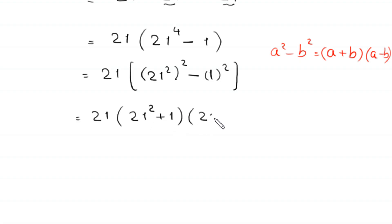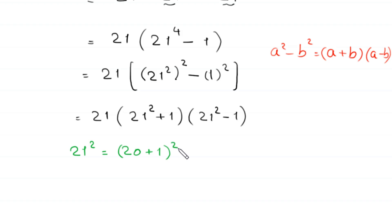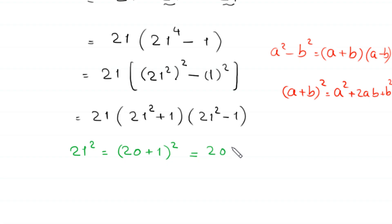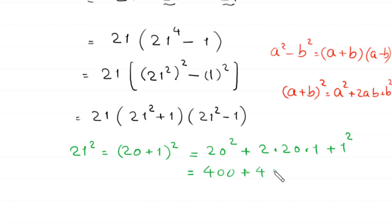Now 21 squared equals (20 plus 1) whole squared. By using the algebraic identity (a plus b) whole squared equals a squared plus 2ab plus b squared, this becomes 20 squared plus 2 times 20 times 1 plus 1 squared. That is 400 plus 40 plus 1, which equals 441. So we replace 21 squared with 441.